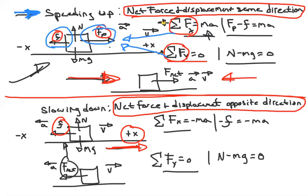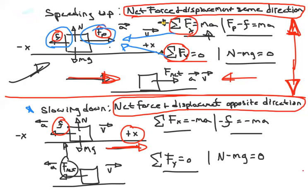Friction is giving us that rate of change of motion. What you should be taking away is less about the free body diagrams and more about these two statements: when speeding up, net force and displacement are in the same direction; when slowing down, net force and displacement are in opposite directions. The free body diagrams take practice and are covered in a different video.